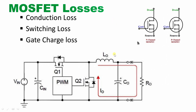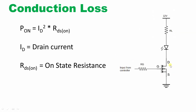The first loss is conduction loss. When the MOSFET is in the on condition, it acts only as a resistance — a minimum-level on-state resistance present in the internal structure of the MOSFET. The formula is P = I²·RDS_on, where I is the drain current (ID) and RDS_on is the on-state drain-to-source resistance.